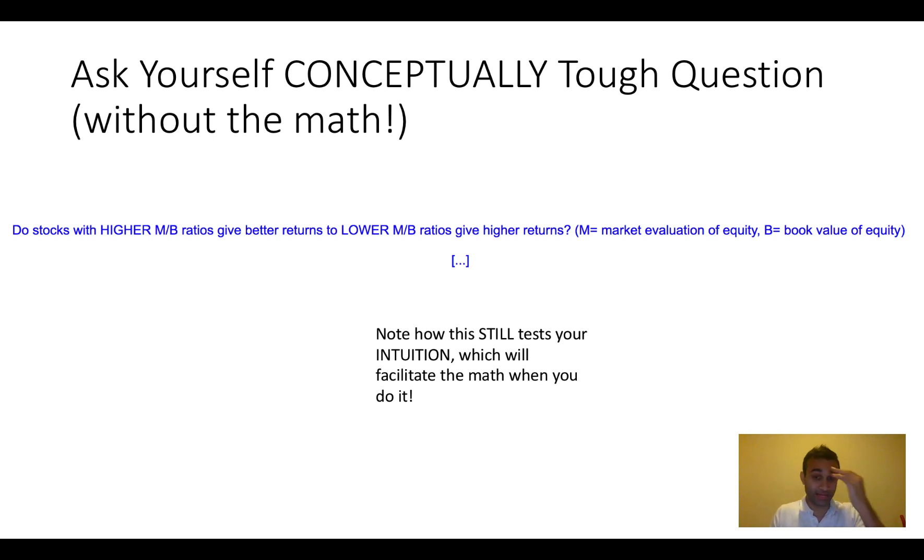And so what do I mean by this? So for example, here's an example question from my investing class. I ask, do stocks with a higher market to book value ratio give better returns or lower returns compared to stocks with lower market to book ratios?